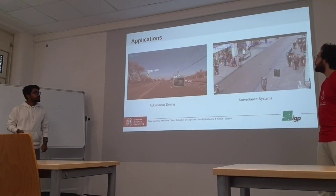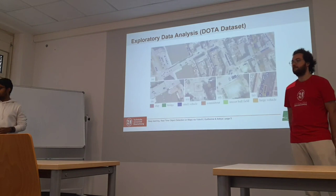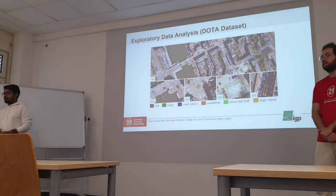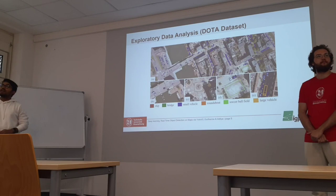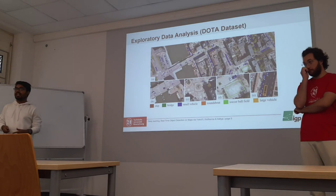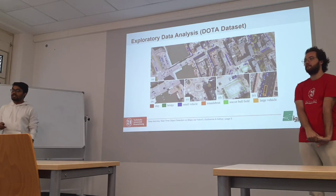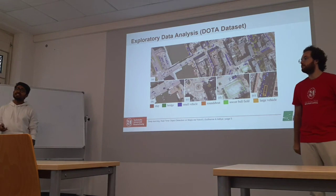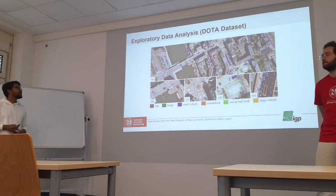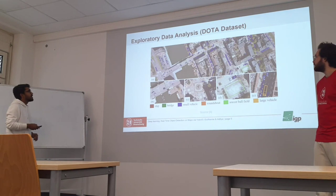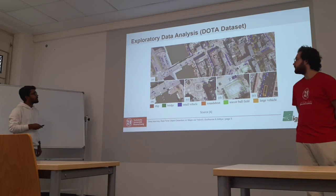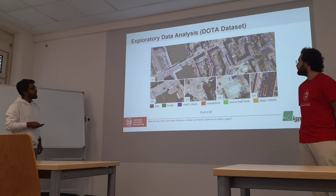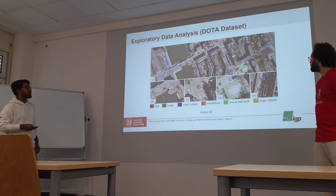Our dataset is DOTA. There are three main sources: the first is Google Earth, which provides the majority of data — almost 85% — in RGB format. The other two sources are JL1 and JL2 satellites, which provide only grayscale images. The format of all these images is PNG. In the image you can see the whole aerial image zoomed in, with different labeled examples — for example, a bridge highlighted in green, a roundabout in orange, and a soccer ball field highlighted in green as well.